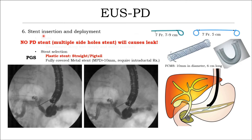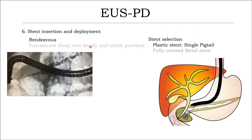Step 6: stent insertion and deployment. For pancreaticogastrostomy, a plastic stent is preferred — either a single pigtail stent, double pigtail stent, or seven French. Consider a fully covered metal stent if the MPD is more than 10 mm in diameter and intraductal treatment is required. The typical metal stent used is 10 mm in diameter and 6 cm long.